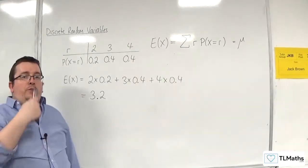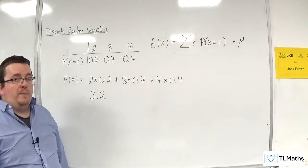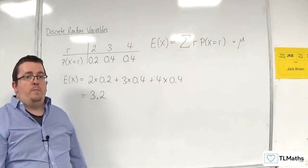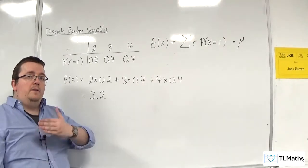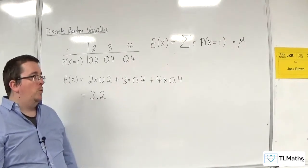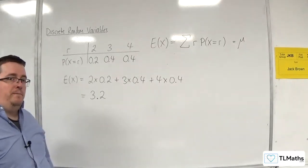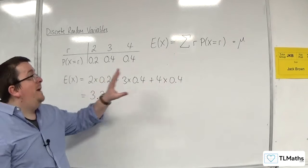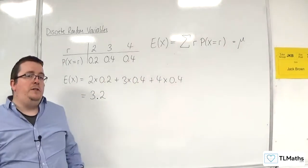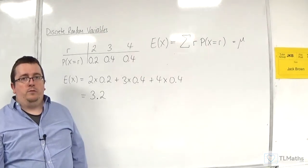Because each of the values — 1, 2, 3, 4, 5, 6 — has an equal chance of coming up, they all average out to 3.5, halfway between 1 and 6. It's like finding the median in that case because all the probabilities are the same. So the expected value is like a long-term average, and that is how you calculate it from a discrete probability distribution.